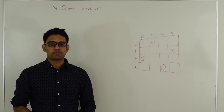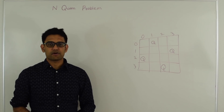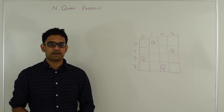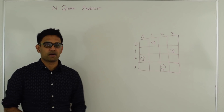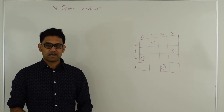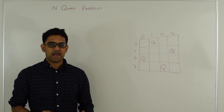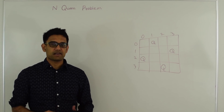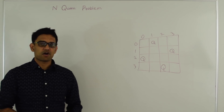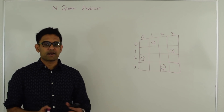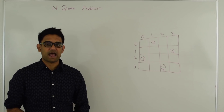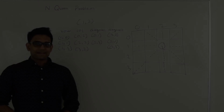We are going to use backtracking to solve this problem. First, let's talk about how a queen attacks. A queen attacks on the same rank, same file, and diagonally. So next let's talk about how we find out if a square is under attack from a queen or not.